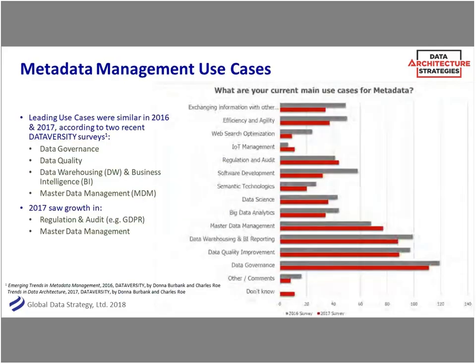Looking at why metadata interest is growing: across both the 2016 and 2017 surveys, certain things didn't change — data governance, data quality, data warehousing, and master data management. You can't do any of those without metadata, especially governance. In 2017, there was growth in regulation — things like GDPR or Basel II — as well as master data management. Almost everything has often a piece of a lot of these disciplines, there's just such a close interrelationship.